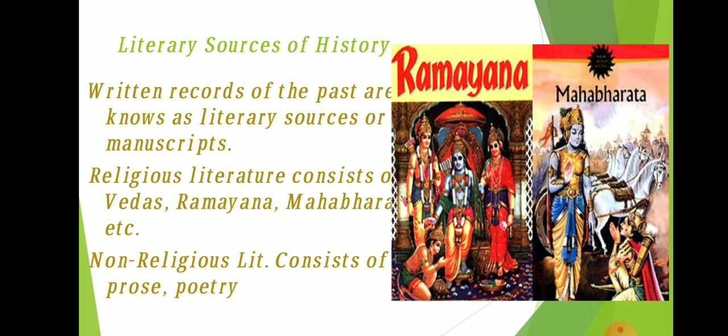First, religious literature. It consists of the Vedas of the Hindus in Sanskrit, Pitakas of Buddhists in Pali, and Angas of Jains in Prakrit. They tell us about the religious beliefs, society, customs and traditions of that time. The Puranas and the epics like the Ramayana and the Mahabharata also provide useful information about that period.